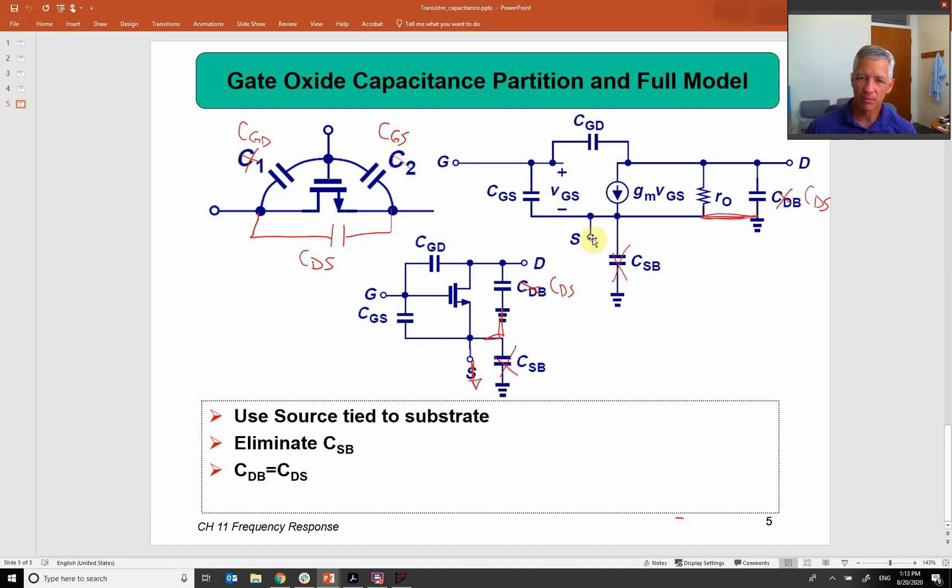So if I do this, you see this point becomes ground. This point becomes ground, which means that this from the source to my body or the source to the bulk gets shorted out. And then this capacitor that goes from the drain to the bulk is going to be tied over to the source. So we're going to replace CDB with CDS because it's connected between the drain and the source through the substrate.